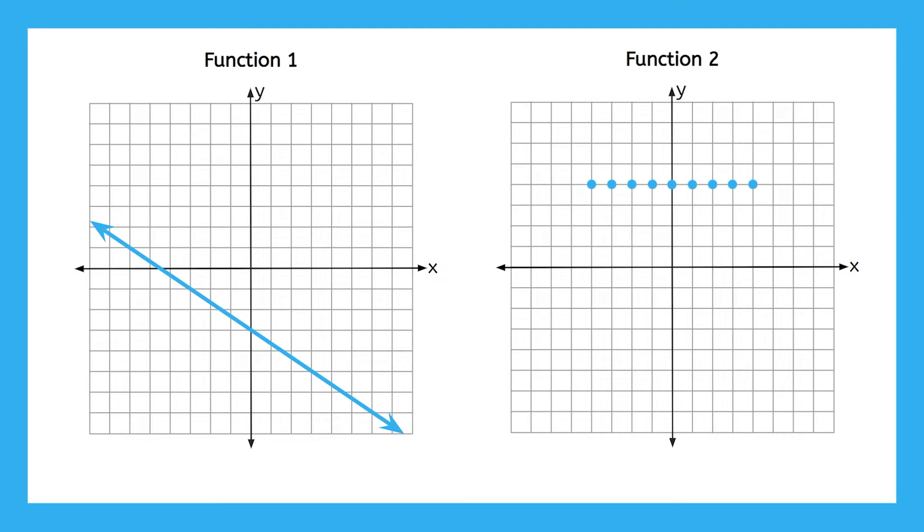Here are the graphs of two more functions. Take a look at the different points that are graphed. Remember, these are all the solutions to the function. Can you determine which of these functions is discrete and which is continuous? Pause the video here and see if you can explain your classifications.